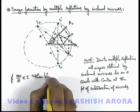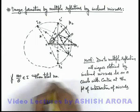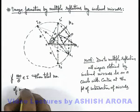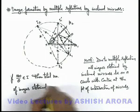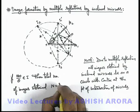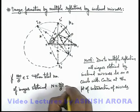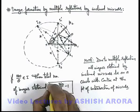Then total number of images obtained can be written as n is equal to 360 by theta minus 1.